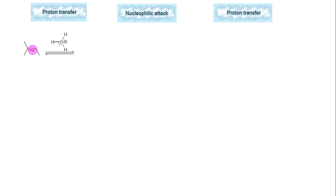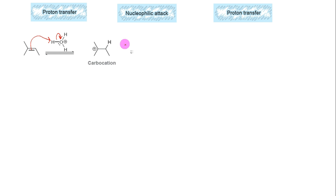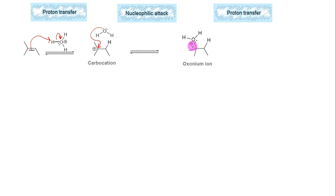Consider this alkene. A proton is added to the alkene to form a carbocation in which this carbon is left with only six electrons. This carbocation is then attacked by a nucleophile — water in our case — to form a charged species called an oxonium ion, so named because oxygen in this case is positively charged.